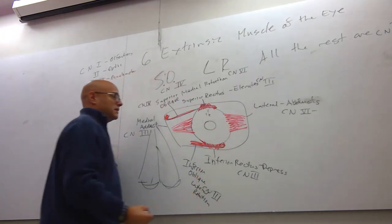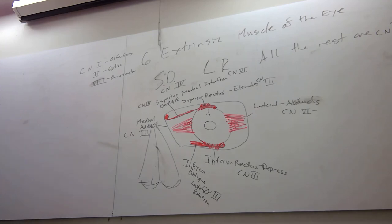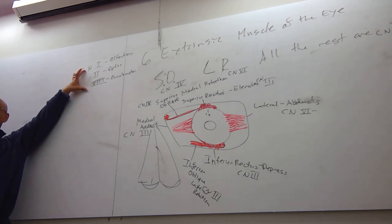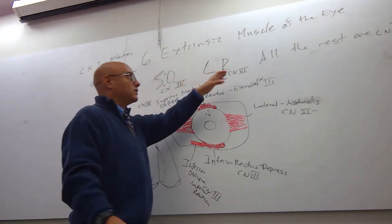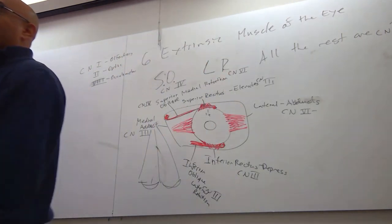Everybody see the method to my madness? So now you know six of the 12 cranial nerves. Because you know the first three were sensory, purely sensory. One, two, and eight. And now you know three, four, and six. Because they're dedicated just for the eye.